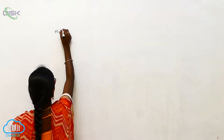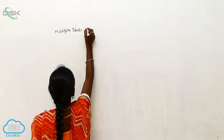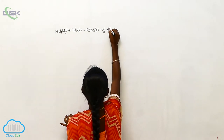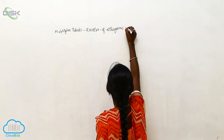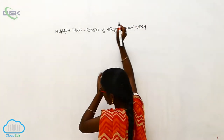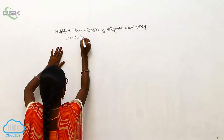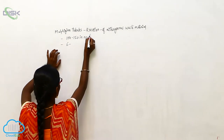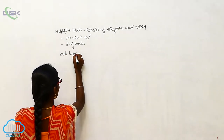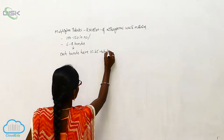The Malpighian tubules are used for the excretion of nitrogenous waste material. The Malpighian tubules are 100 to 150 in number and arranged in 6 to 8 bundles, with each bundle having 15 to 25 tubules.